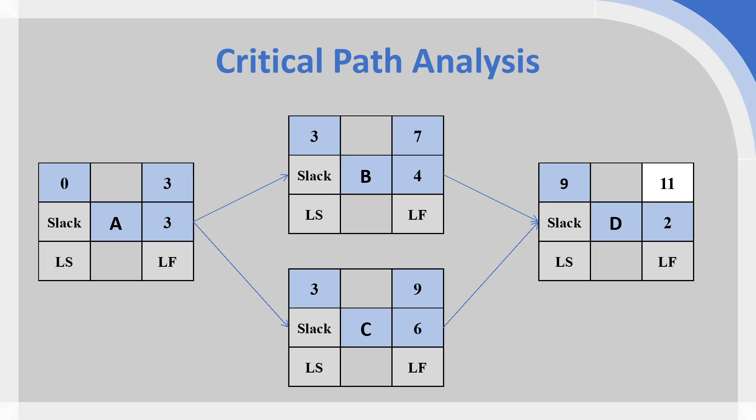Now we want to understand if there's any slack in our network diagram. The finishing activity will always have the same early start and early finish as its late start and late finish, so we put late start as day nine and late finish as day 11 for activity D. We've just done a forward pass — left to right, early start to early finish — and now we're going to do a reverse pass: late finish to late start, right to left through our network diagram.